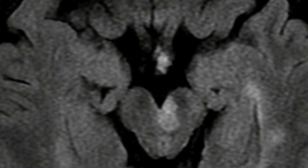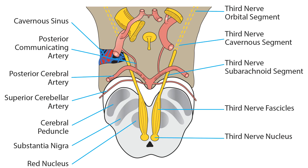The subarachnoid segment of the third nerve travels within the interpeduncular fossa to the cavernous sinus. On the way, it becomes wedged between the posterior cerebral artery and the superior cerebellar artery, where it can be compressed by an aneurysm at the takeoff of the superior cerebellar artery. Farther along, it runs lateral to the junction of the internal carotid and posterior communicating arteries — an even more common site of compression by aneurysm.